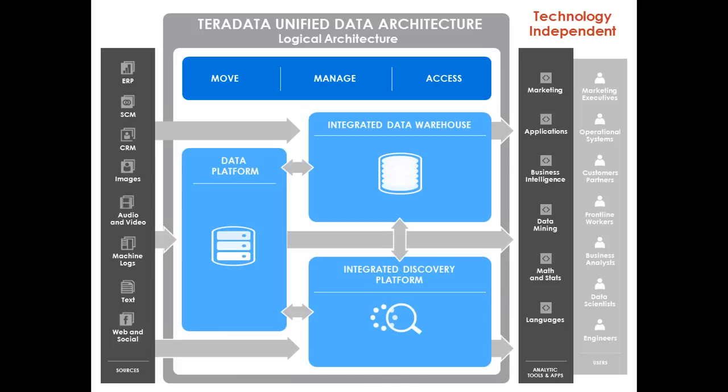Network I/O is going to be your biggest bottleneck when it comes to big data and moving data around. All these different components of the UDA can be bought independently — if I only want Aster, that's fine; if I want a Teradata EDW, that's fine too; or the Hadoop side. I can buy them in any combination.